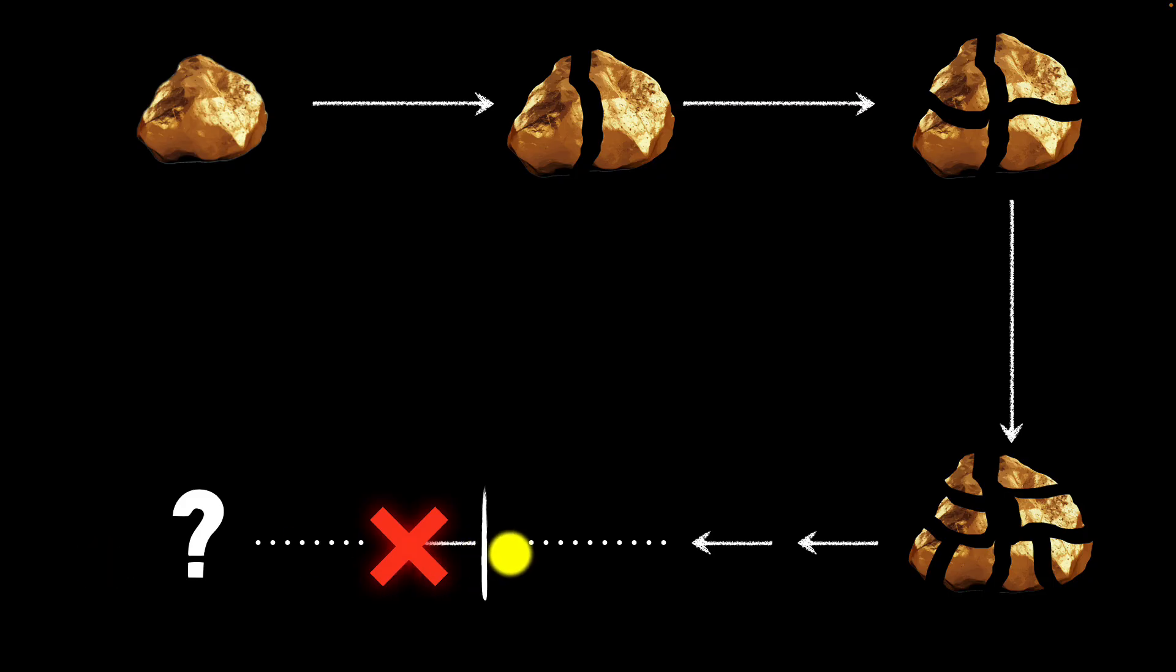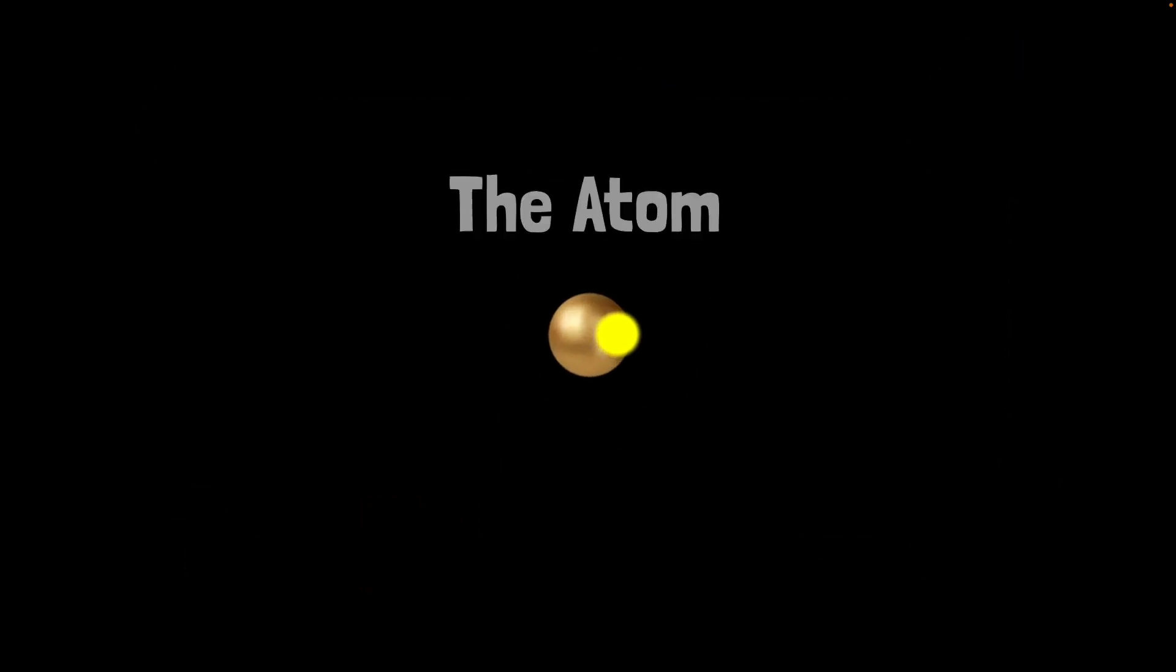Maybe eventually you will get one last smallest piece of that element. A smallest piece of gold, for example, which you cannot break any further. A lot of people believed in this idea. And the Greeks actually named this smallest piece, the atom. The word atom literally means uncuttable, because they believed that you cannot break this even more.